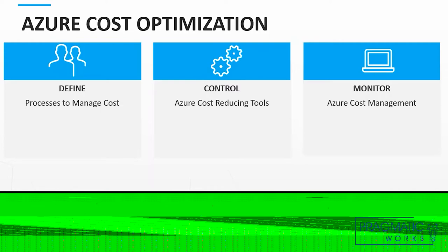The three steps involved in your strategy to optimize cost in Azure are: define, control, and monitor. Define is about processes that you will put in place. Control is about tools in Azure that you can leverage for cost optimization. Monitor is about gaining visibility on your consumption, your usage, and billing.